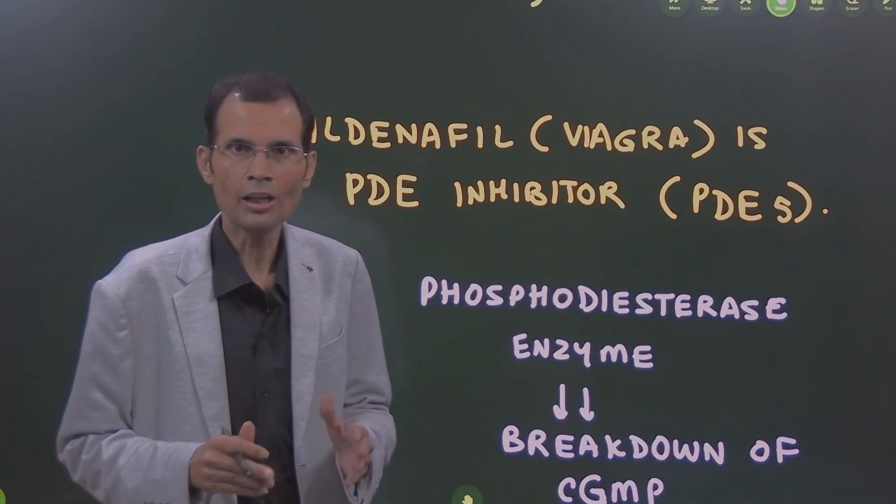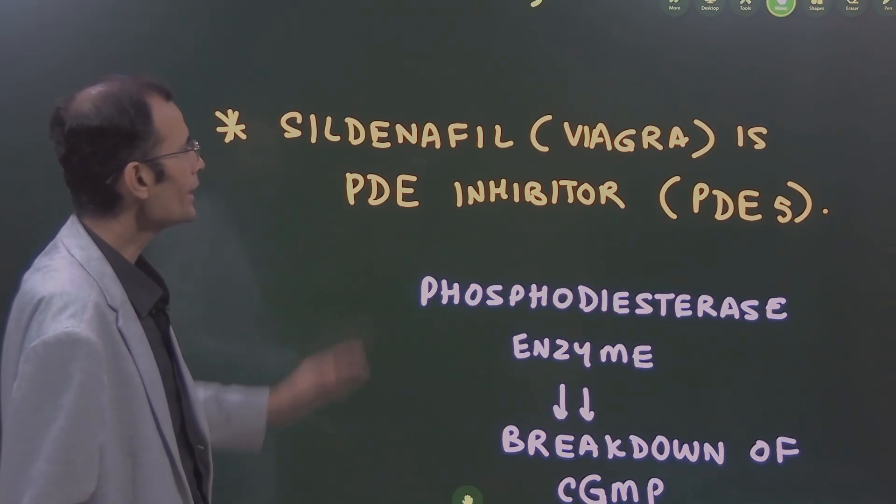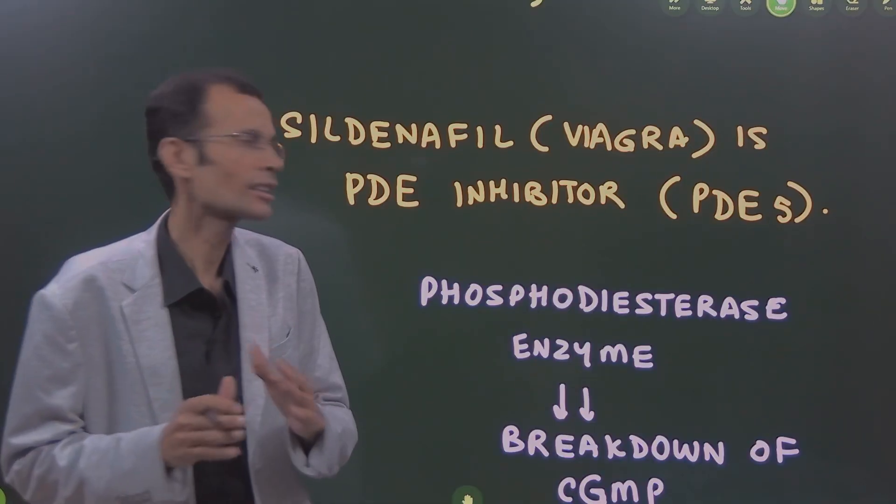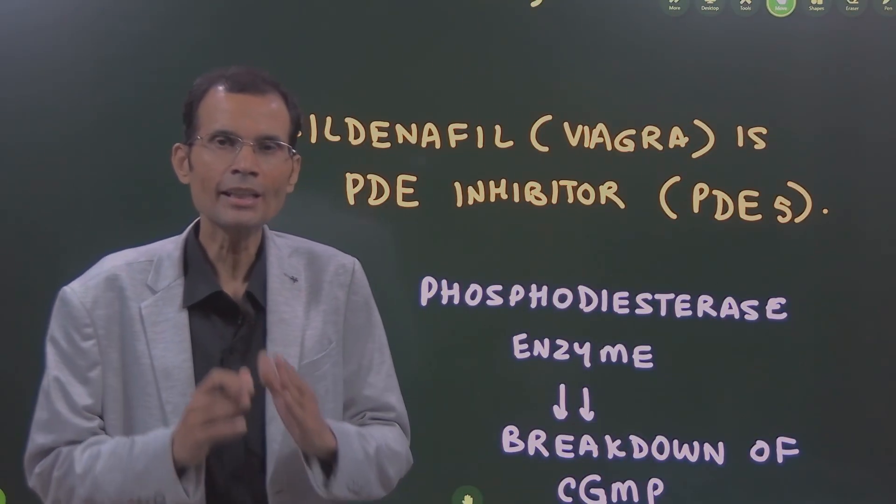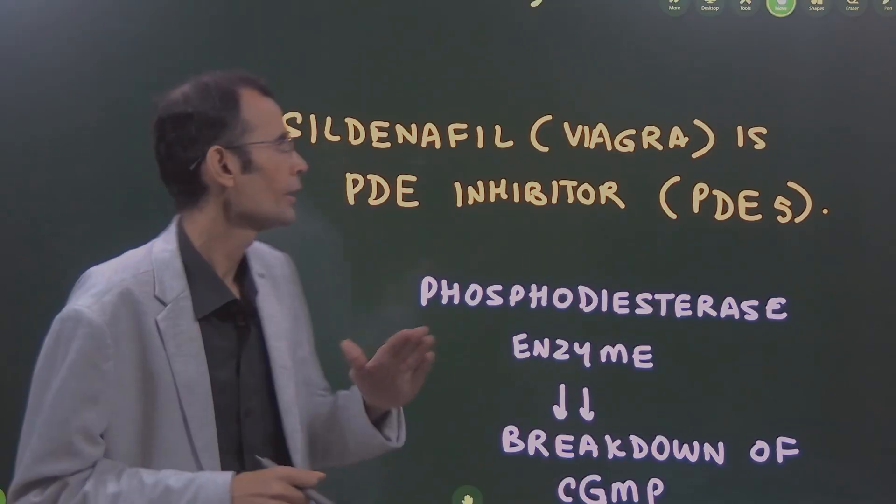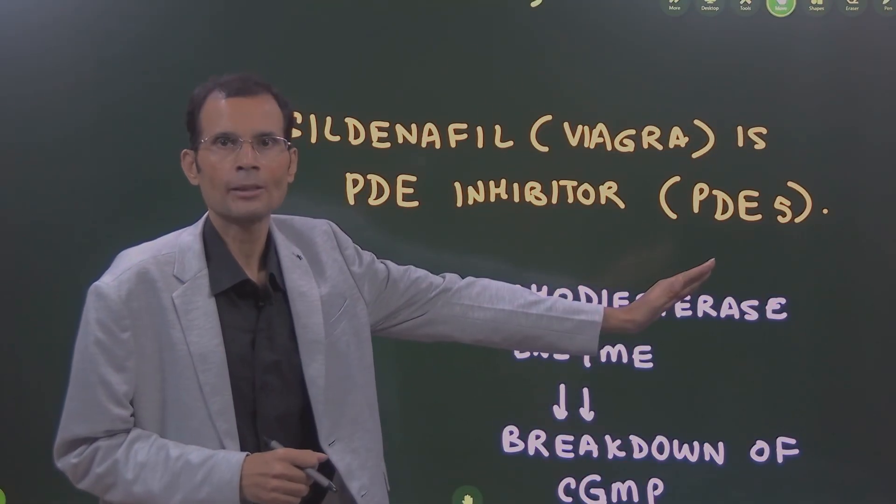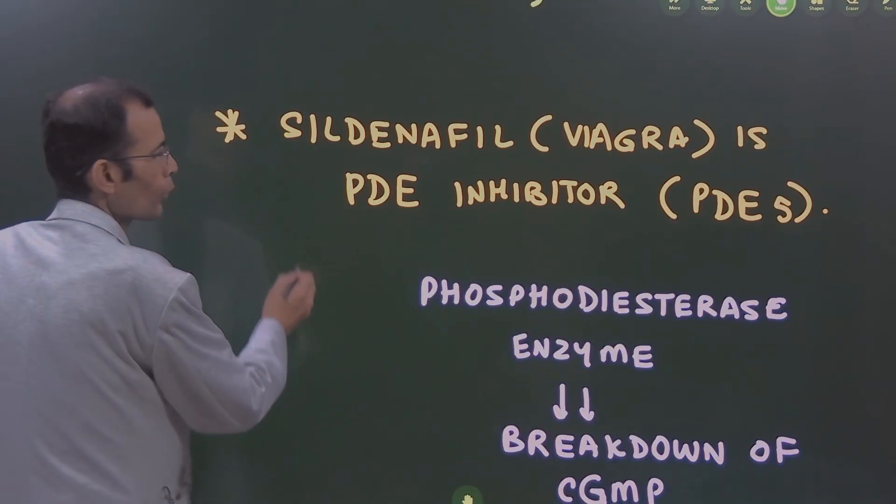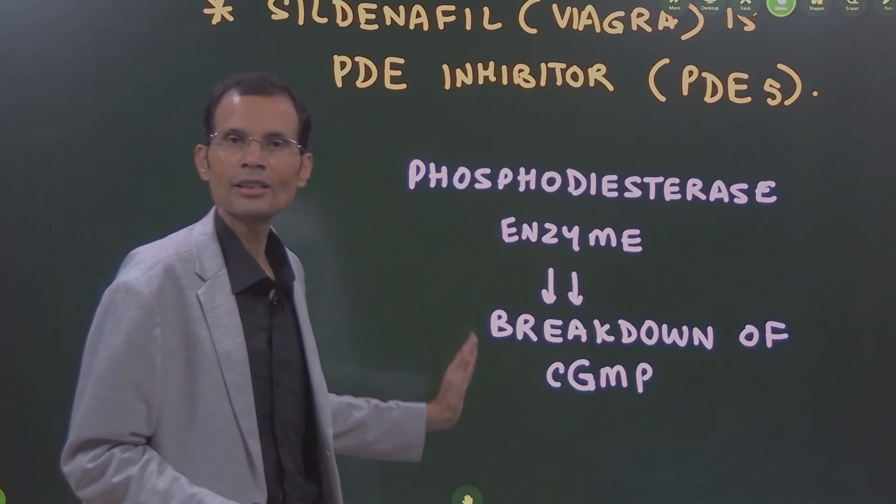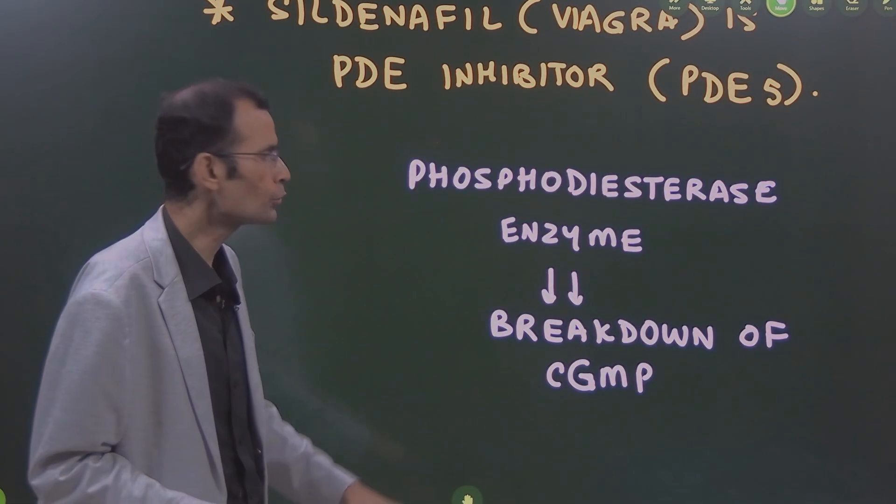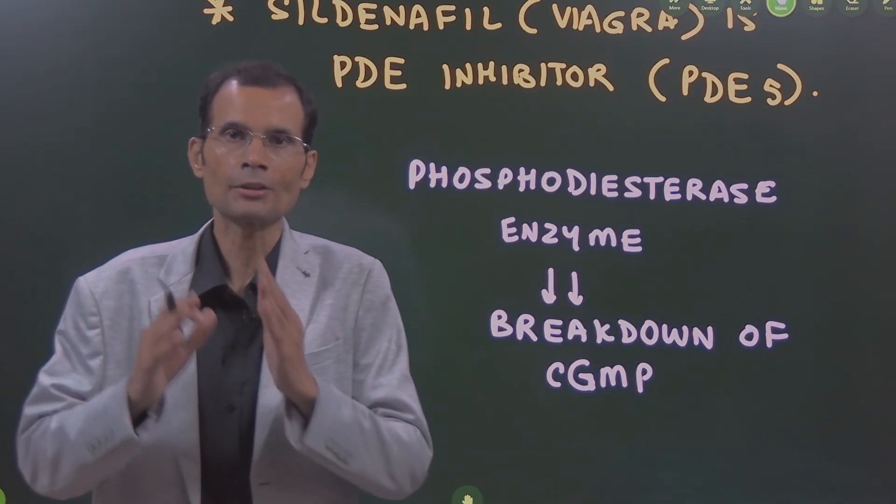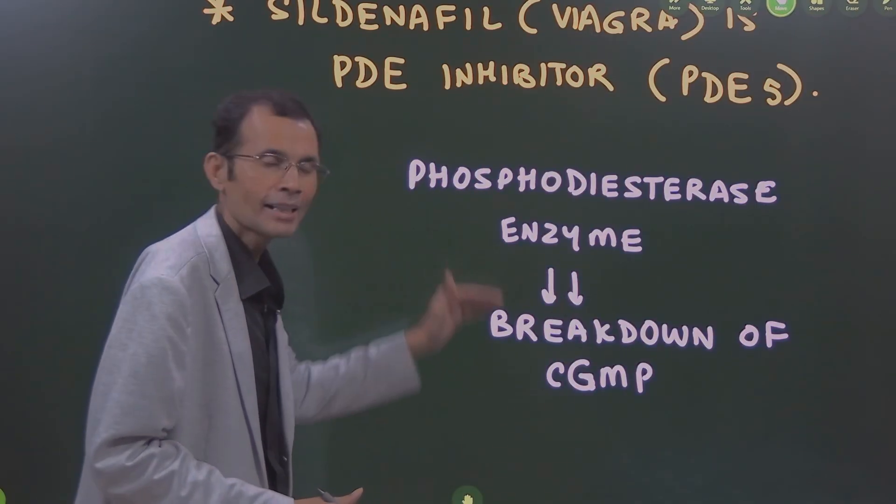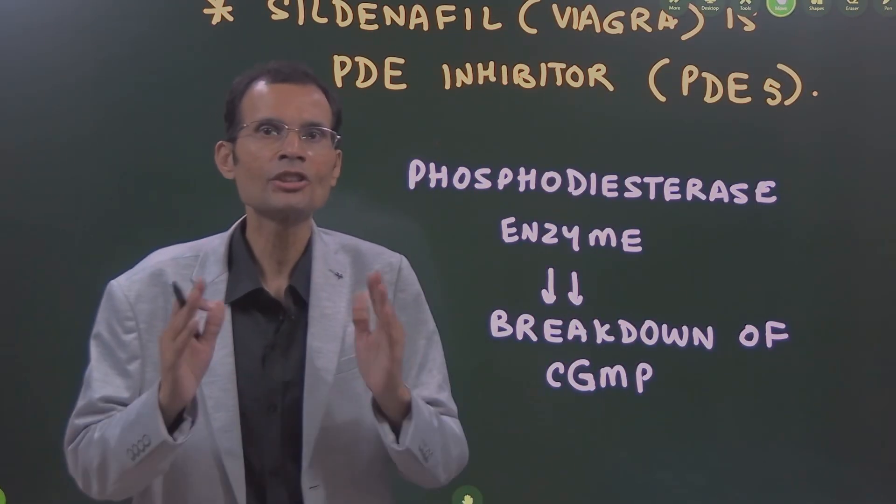Sildenafil, the drug, is basically a PDE inhibitor. Specifically, it inhibits the enzyme PDE5 subtype, phosphodiesterase enzyme subtype 5. What is the action of phosphodiesterase enzyme?